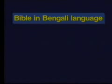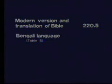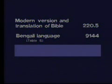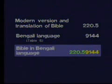There are several such situations where a language number can be worked out. For example, Bible in Bengali language: the number is 220.59144. The number for modern version and translation of Bible is 220.5. The number for Bengali language taken from Table 6 is 9144. When we join this number, it becomes 220.59144 — the number for Bible in Bengali language.